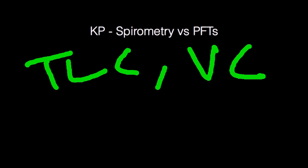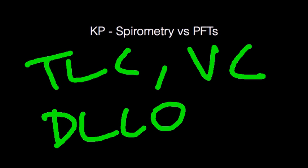The next thing the PFT includes is the DLCO — the diffusion capacity. This is especially relevant when you're evaluating causes of oxygenation issues. The diffusion capacity of carbon monoxide serves as a surrogate for oxygenation and is an additional component contained in the PFT.